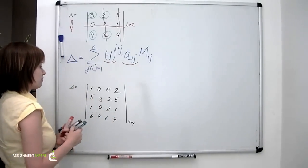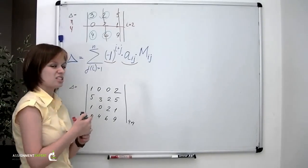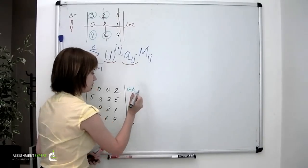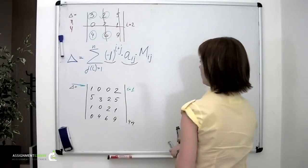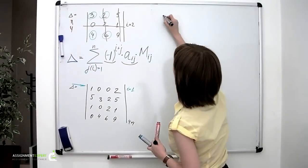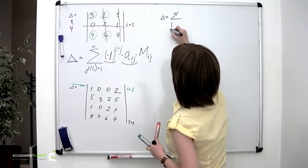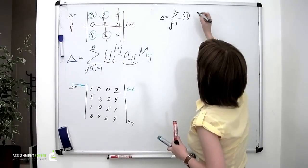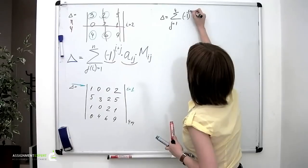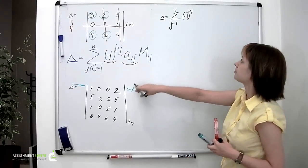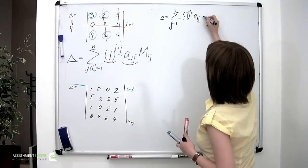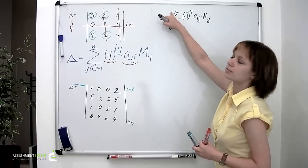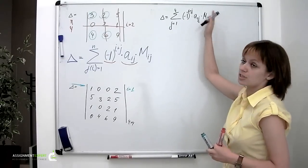Now again, as the rule says, first of all we're picking a row or a column containing the least possible non-zero entries. And I suggest that we pick the first row, which means that we're setting i to the value of 1. The formula for this particular case would look like this: delta equals the sum of j changing from 1 to 4, because this one right here has 4 columns, minus 1 to the power of 1 plus j times a_1j and times M_1j. Now changing j from 1 to 4 step by step, we will obtain 4 summands for this formula. Let's do that.